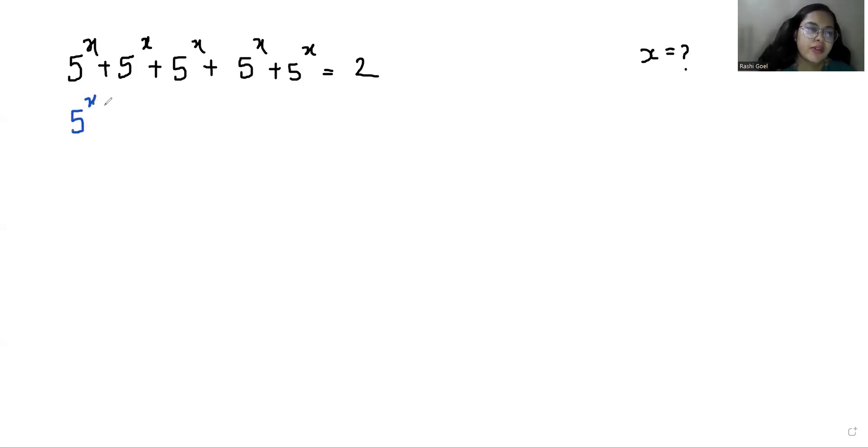I can take 5^x as common. Now 5^x times 5 equals 2, so 5^x equals 2/5. Now I am taking log on both sides. x log 5 equals log(2/5).